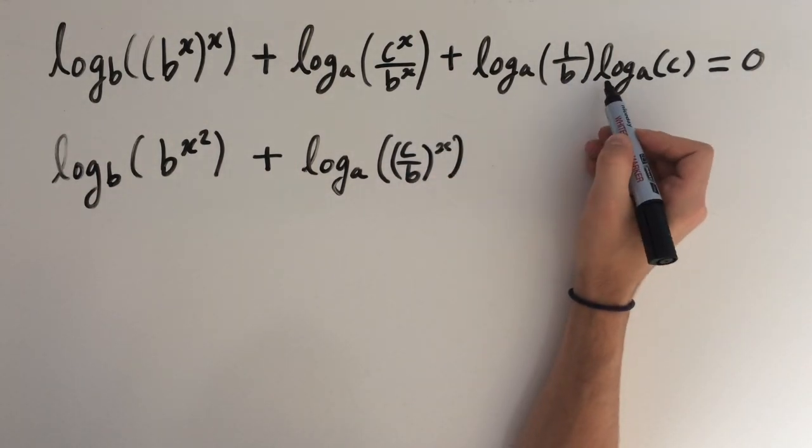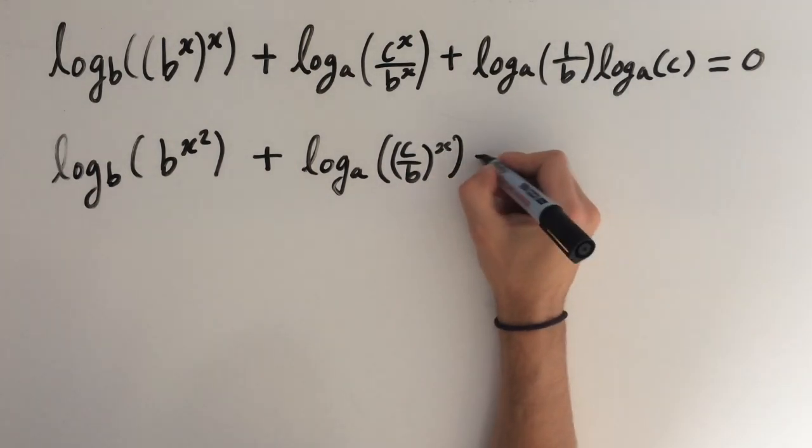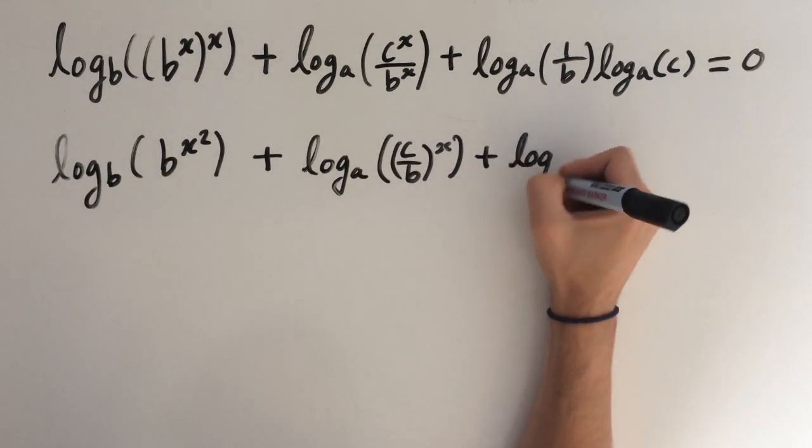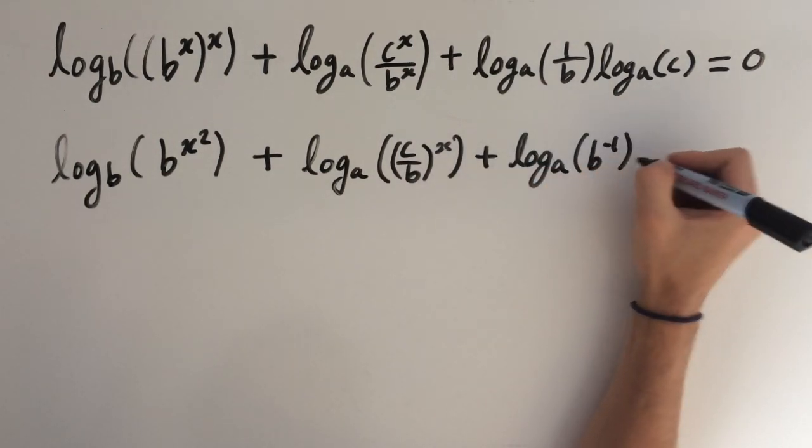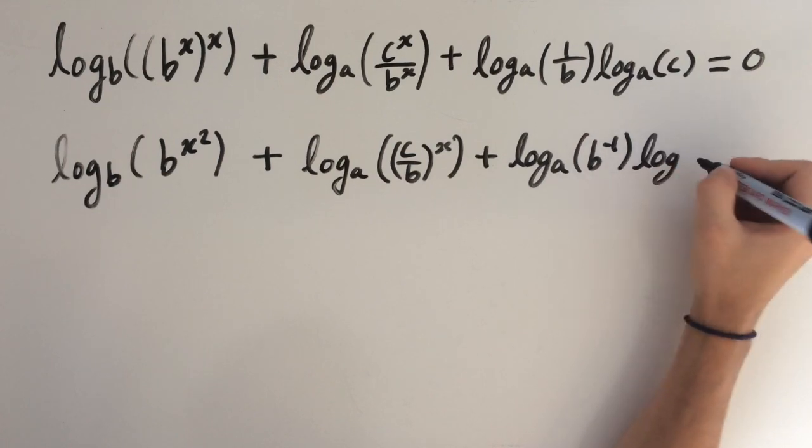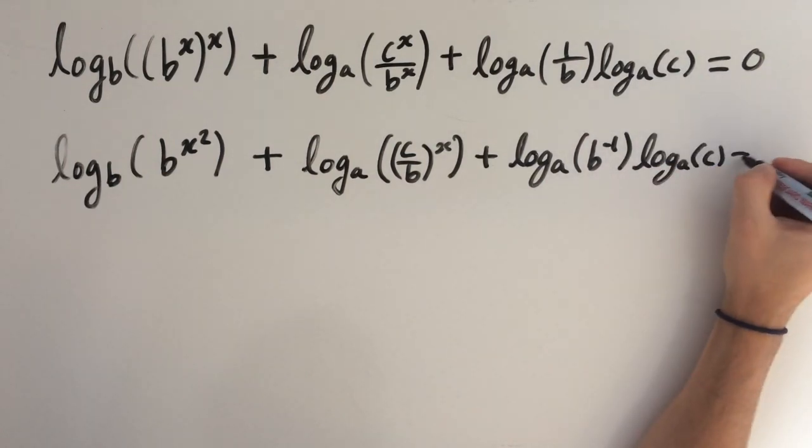And 1 over b, we can rewrite this as b to the minus 1. So plus log base a of b to the minus 1 times log base a of c, and this equals 0.